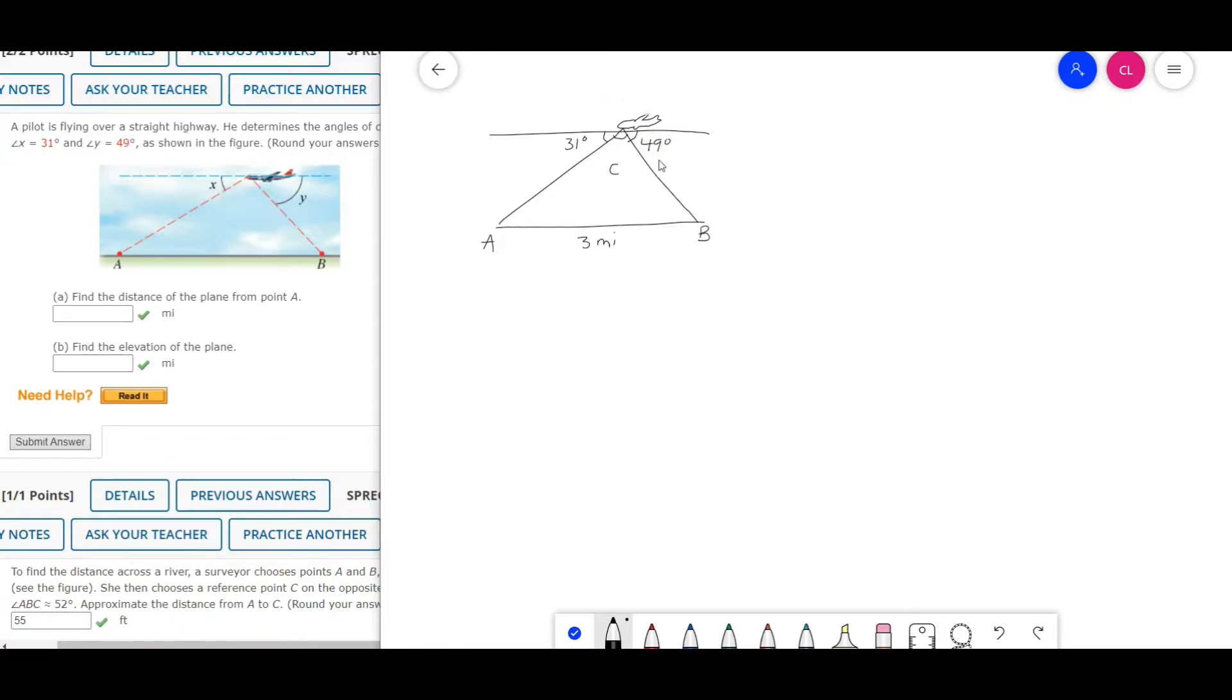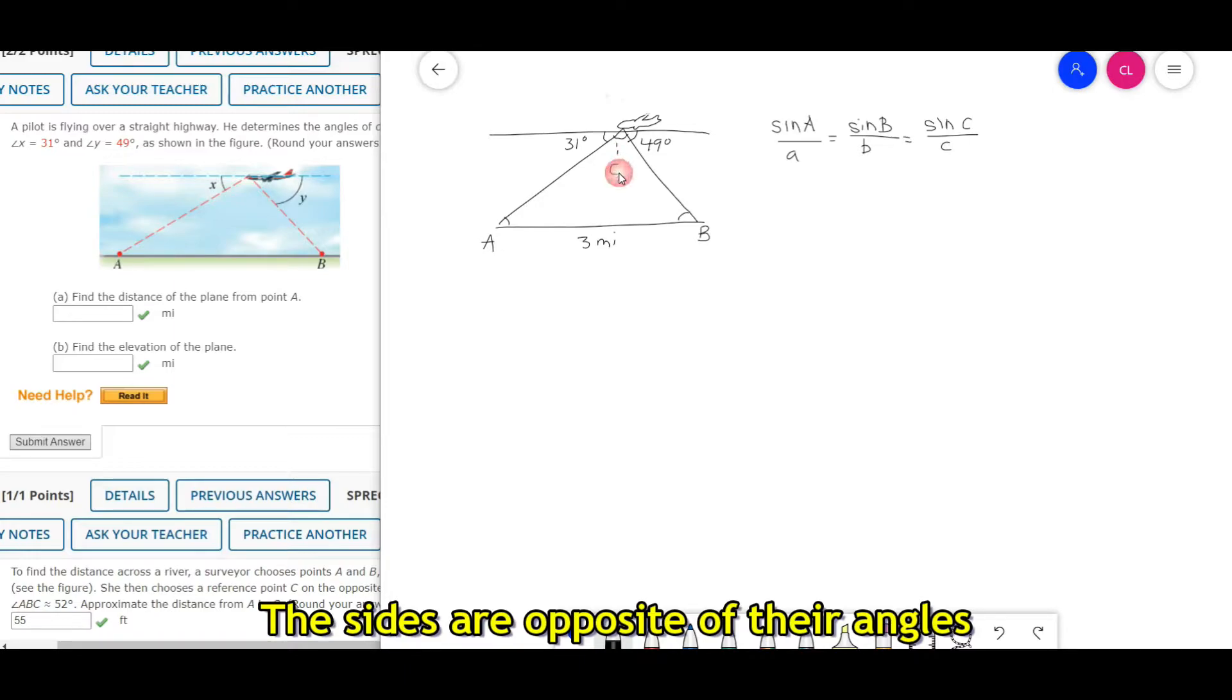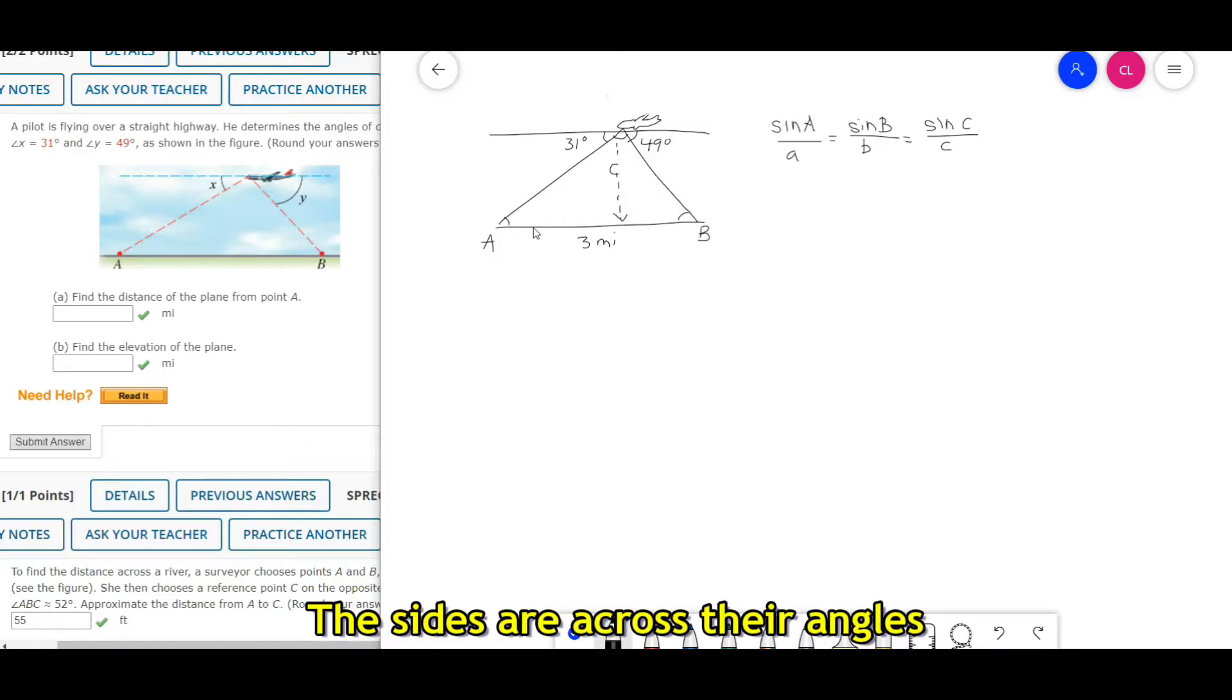Angle C is not given. Recall that the law of sines states that sine of A over side a equals sine of B over side b equals sine of C over side c. Basically, each angle corresponds to their sides. Angle C corresponds to side C, angle A to side a, and angle B to side b.